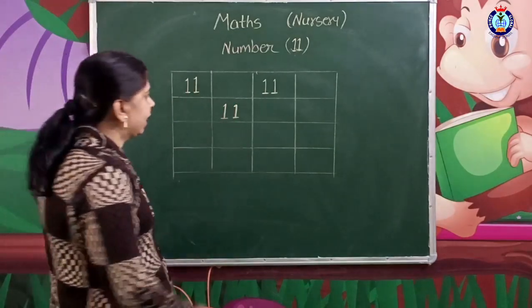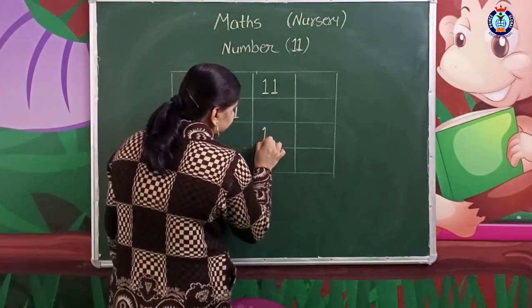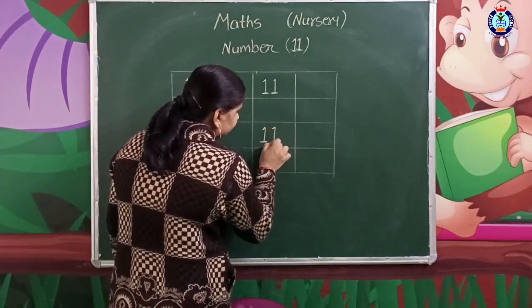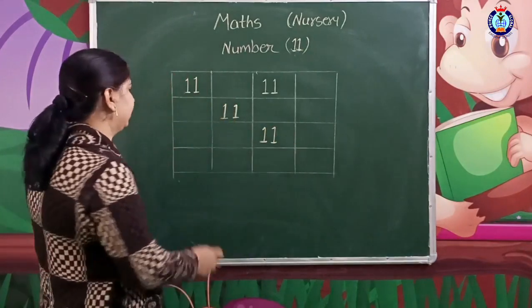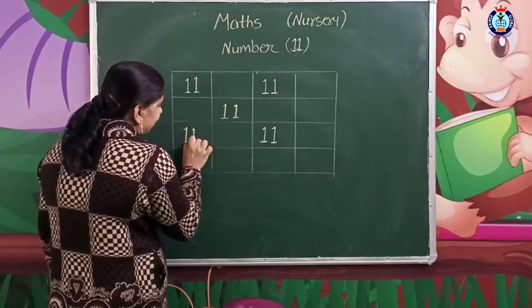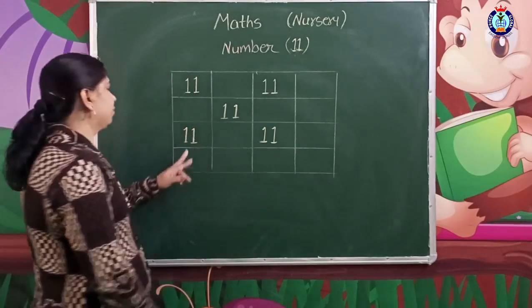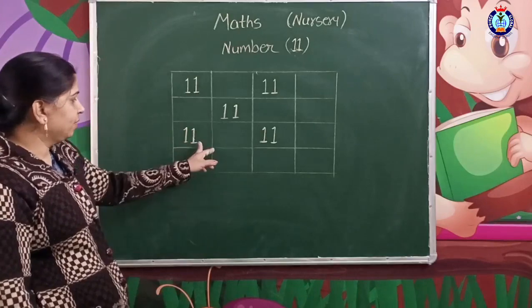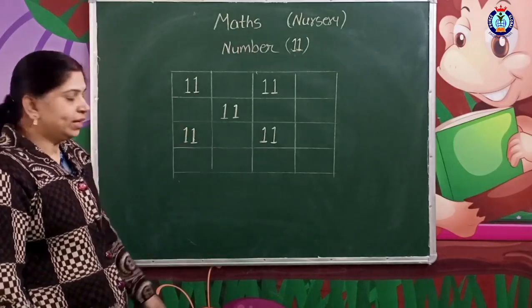This is what it looks like. When you have two ones together, you get 11.